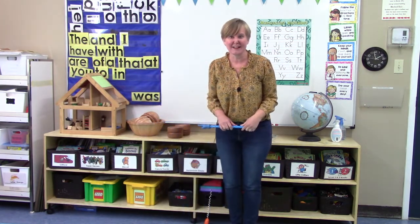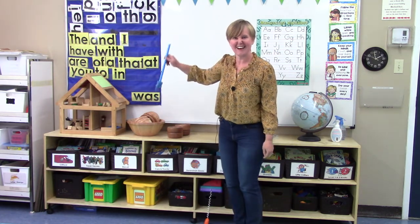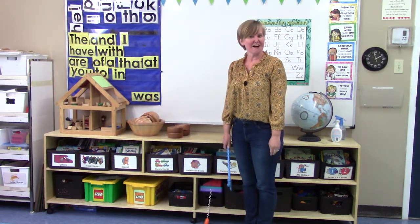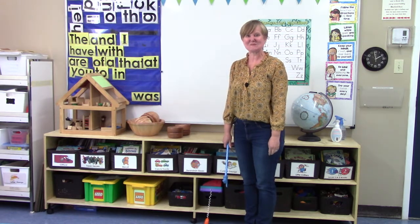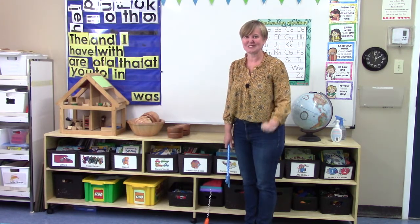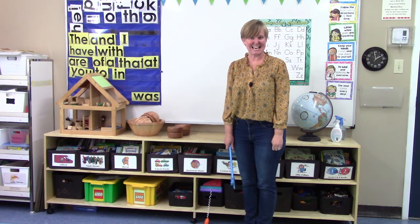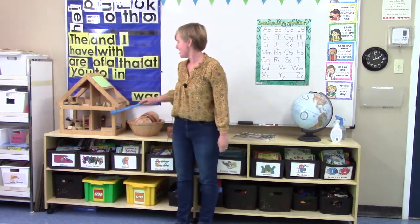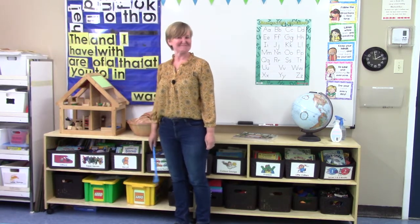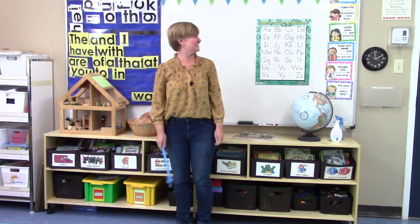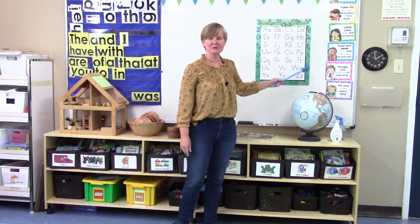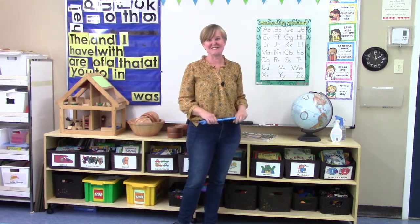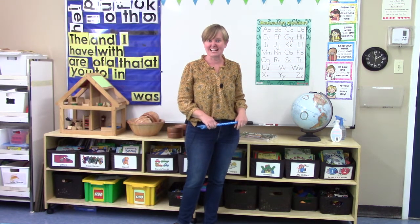Do you see any more? Look down! Do you see that all of the labels on our book bins are rectangles? They have four sides and four angles. Do you see anything else that is a rectangle? What about the bottom half of our dollhouse? Or even our posters here on the side that remind us to listen while others are speaking, or keep our hands and feet to ourselves. Those are rectangles as well.